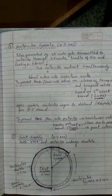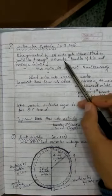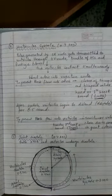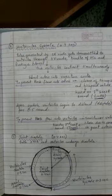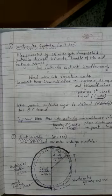Once the ventricles are fully filled, they contract for 0.3 second. The impulse from the SA node reaches the AV node, which passes the message through the Bundle of His, finally reaching the Purkinje fibers. This causes both ventricles to contract simultaneously. As they contract, blood leaves the respective ventricles: the right ventricle pushes blood into the pulmonary artery, and the left ventricle pushes blood into the systemic aorta.